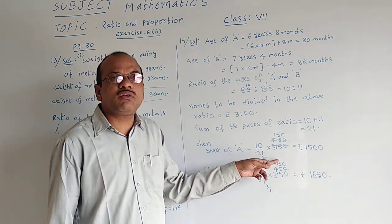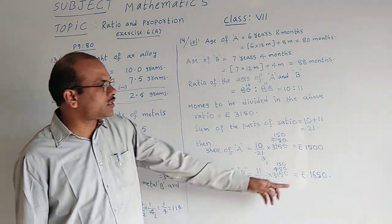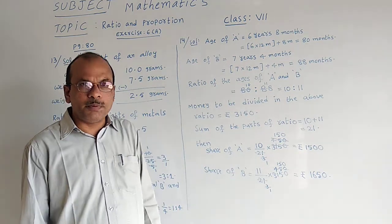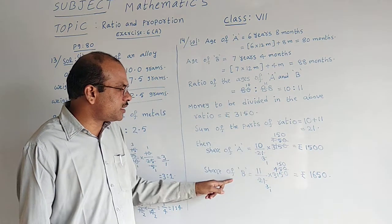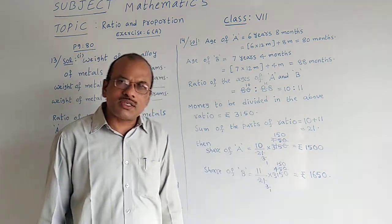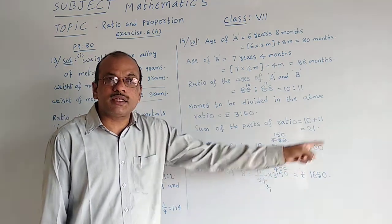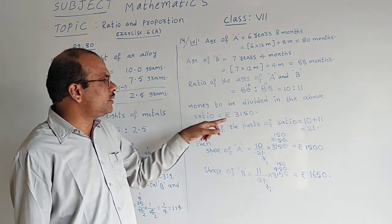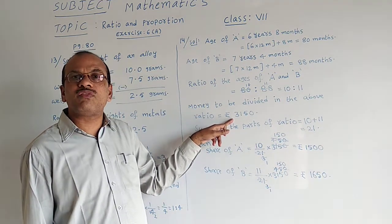Now 11 and 150 if we multiply, we will get an answer called 1,650 rupees. That is the share of person B. Share of person A is 1,500 rupees, person B share is 1,650 rupees. If both the shares are added, you will get the total money divided between them: 3,150 rupees.